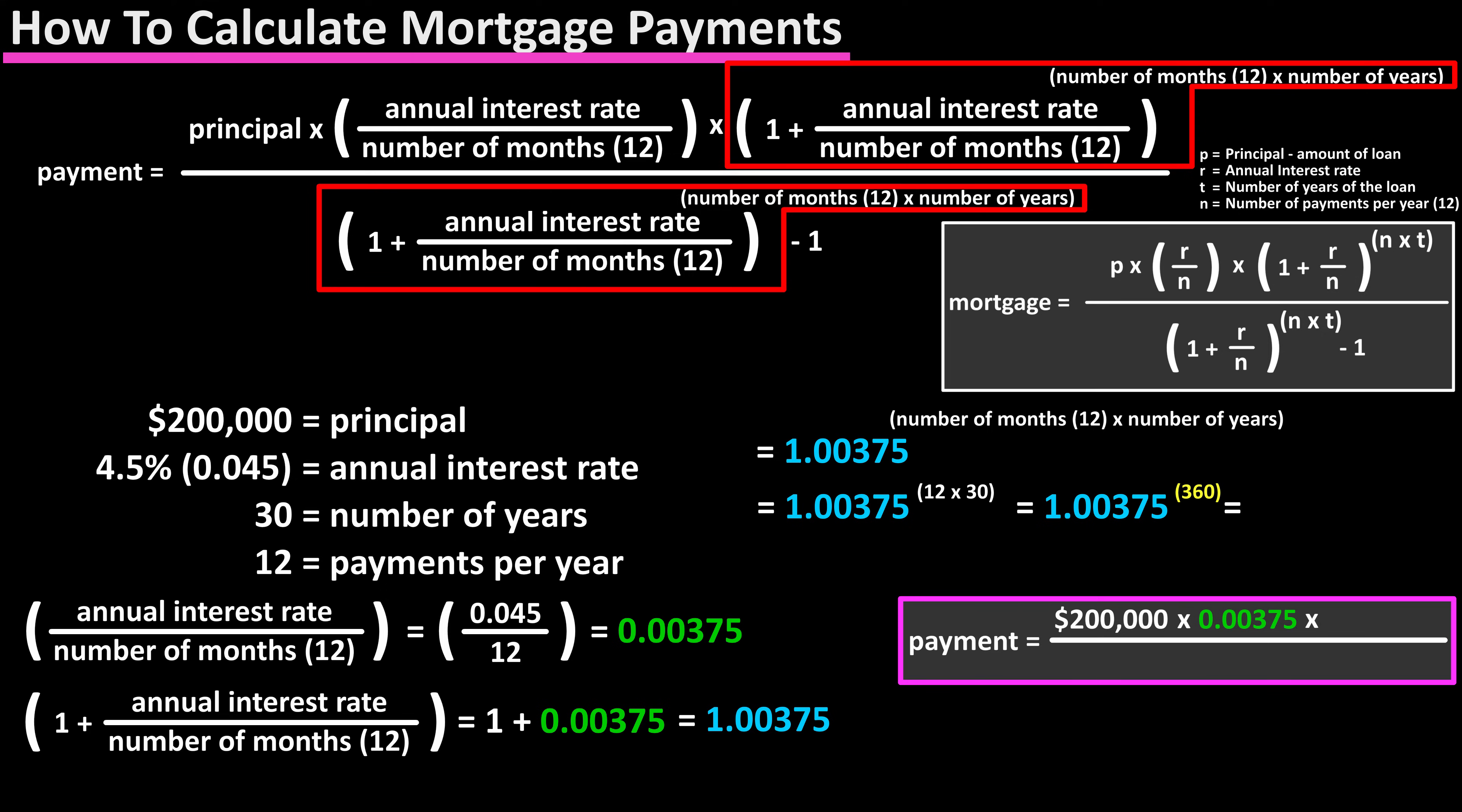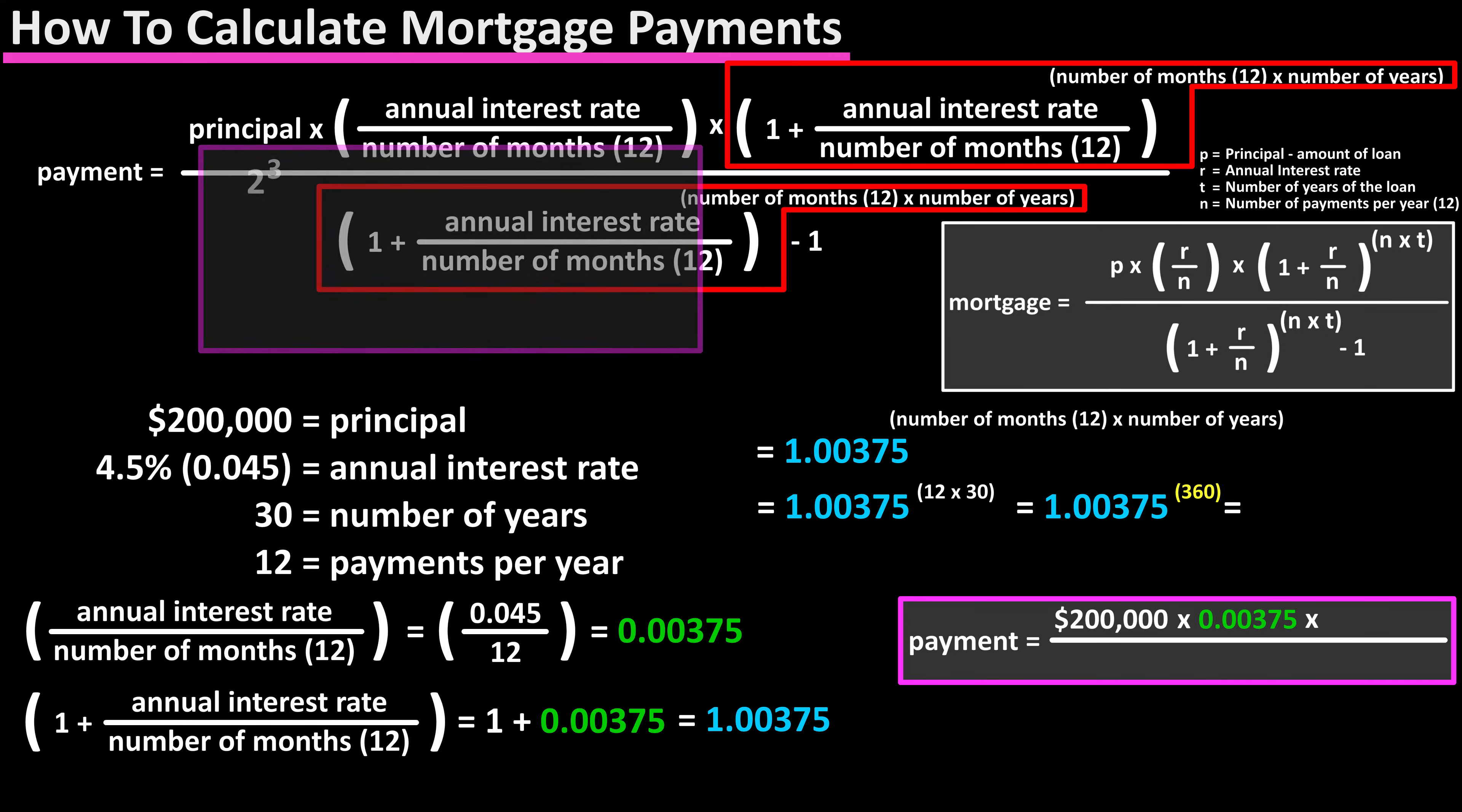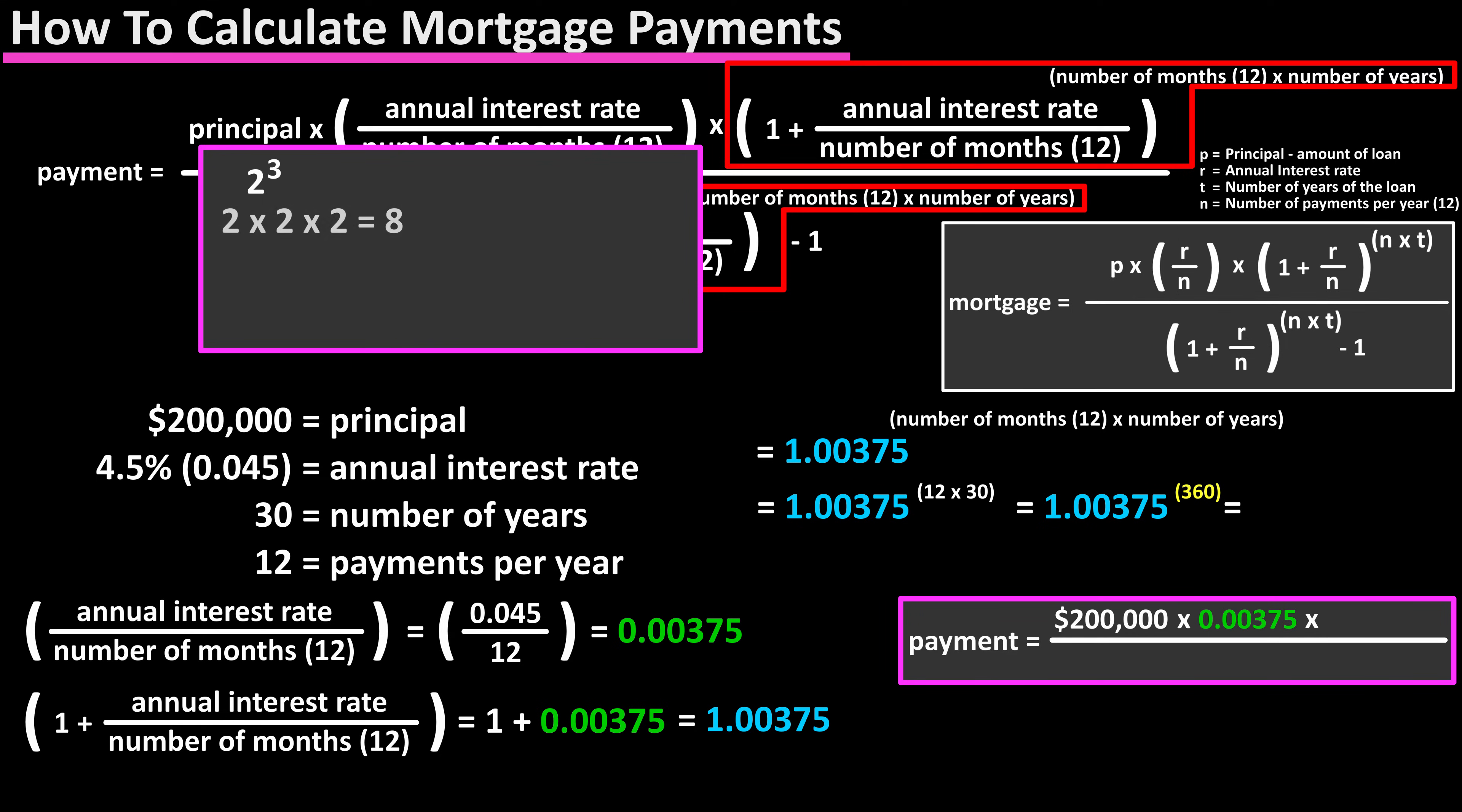If you recall, when we raise some number to a power, such as 2 raised to the 3, we just multiply that number times itself that many times, so 2 times 2 times 2, which is 8. In our formula, this is 1.00375 times itself 360 times.